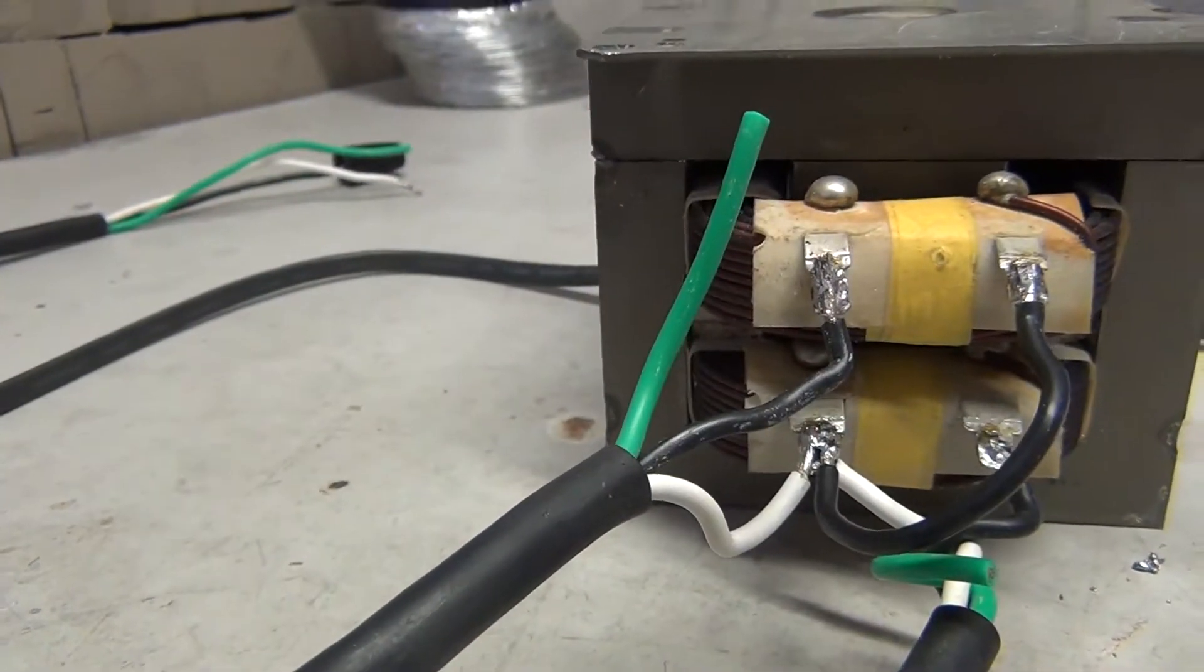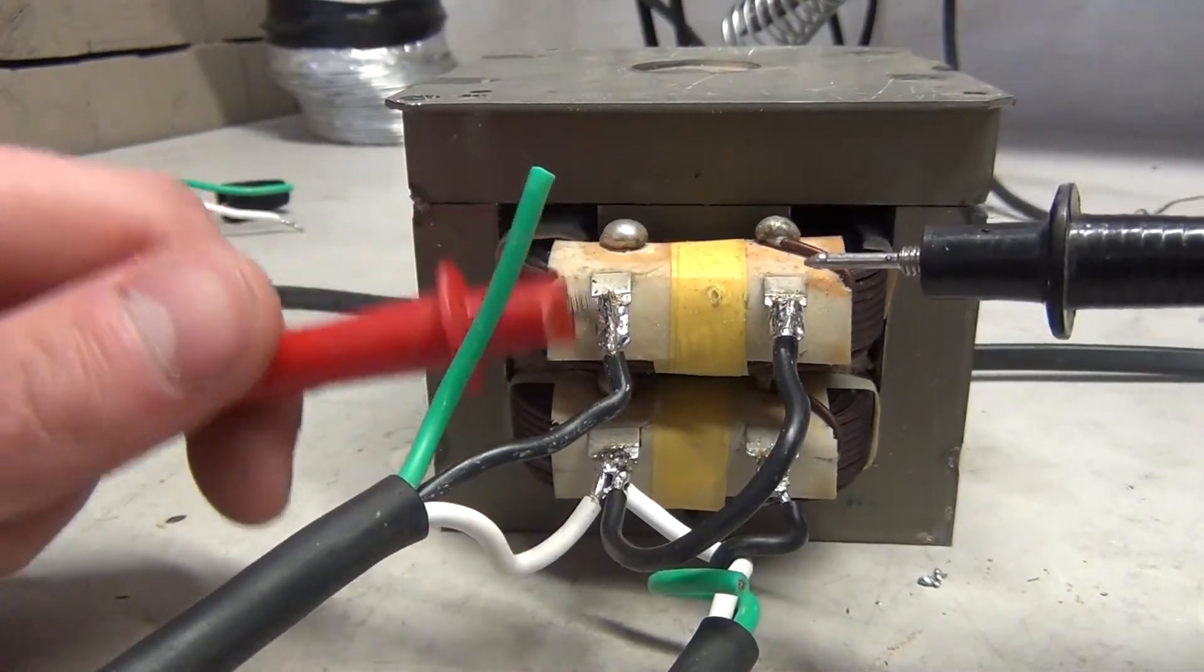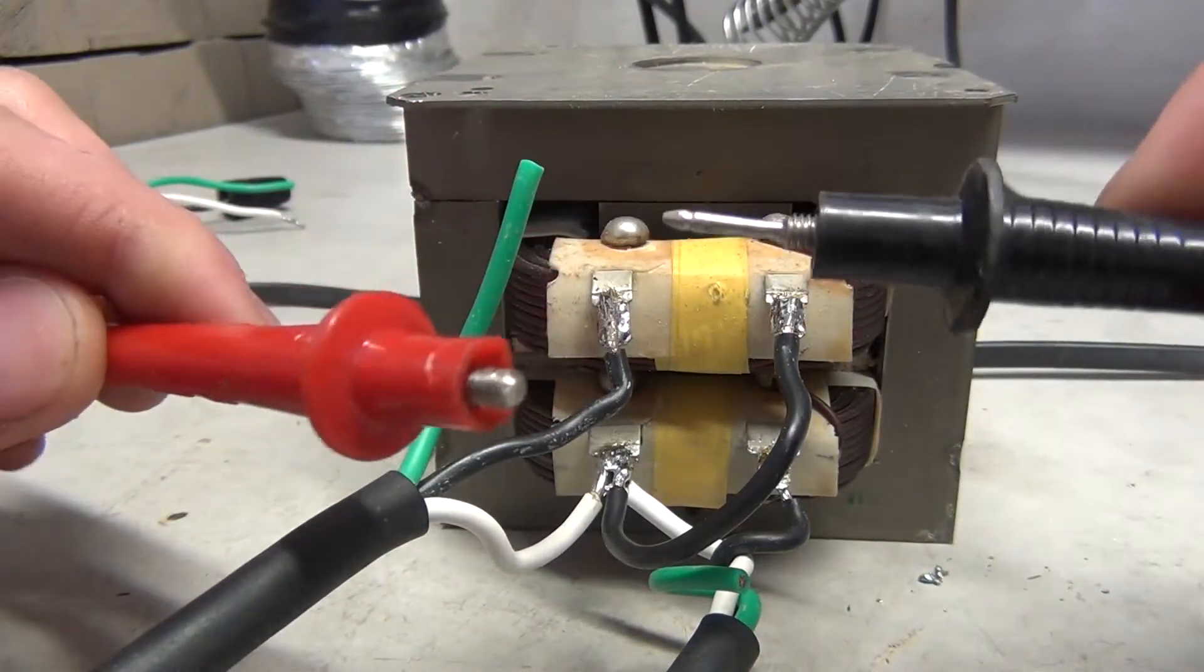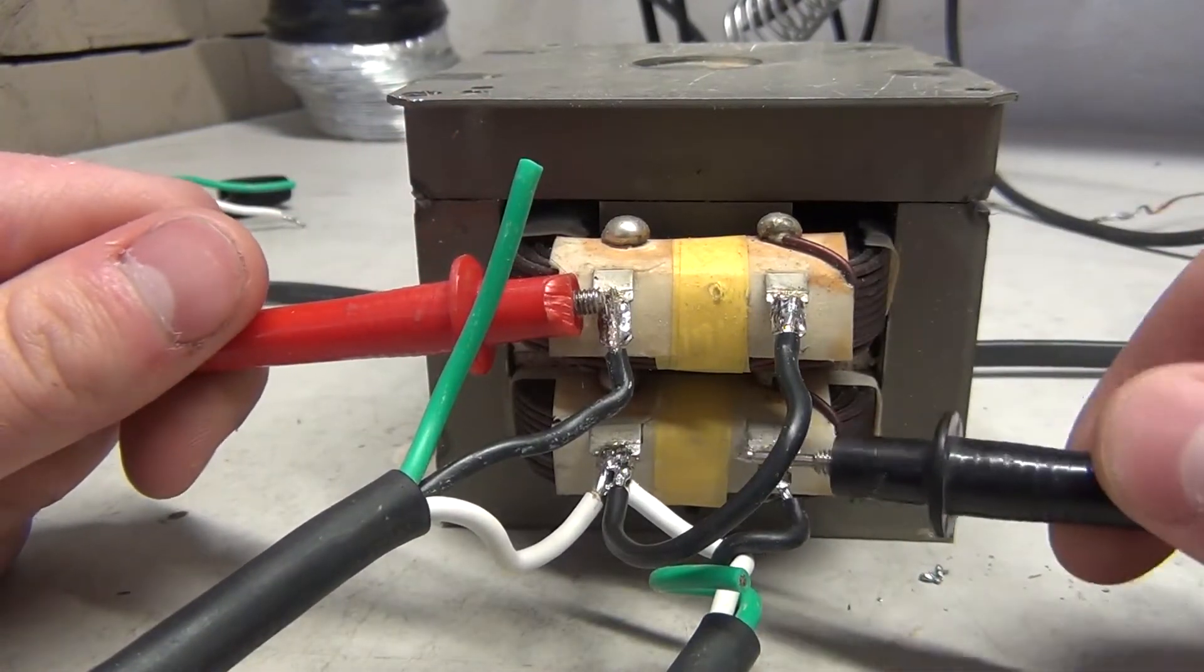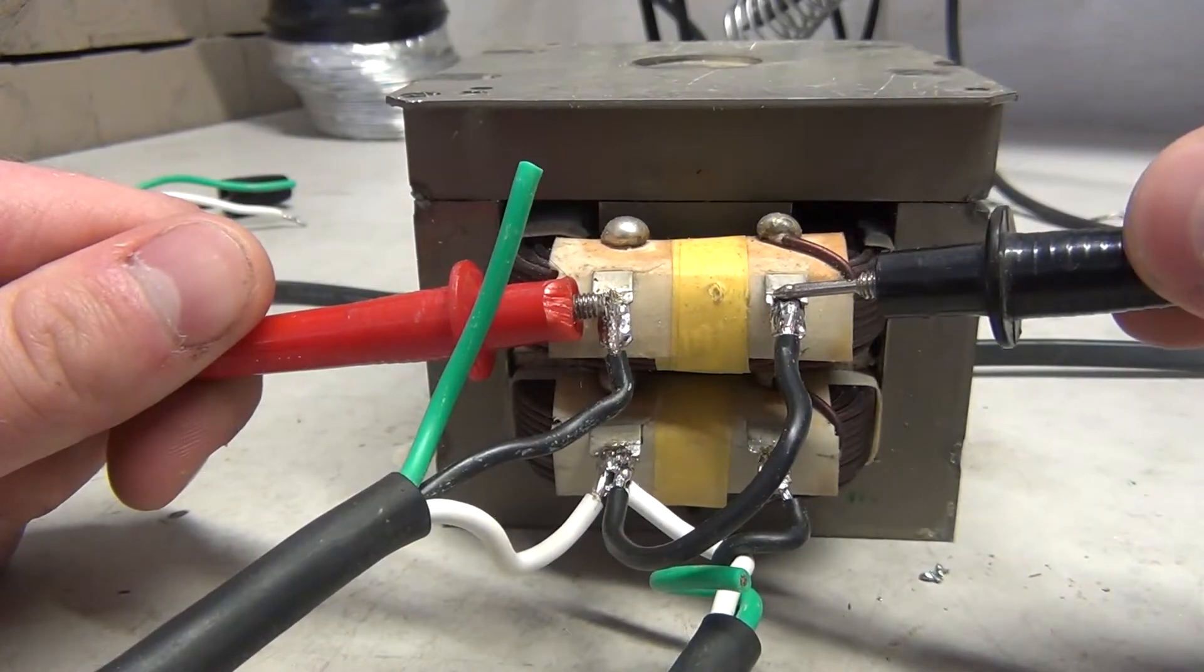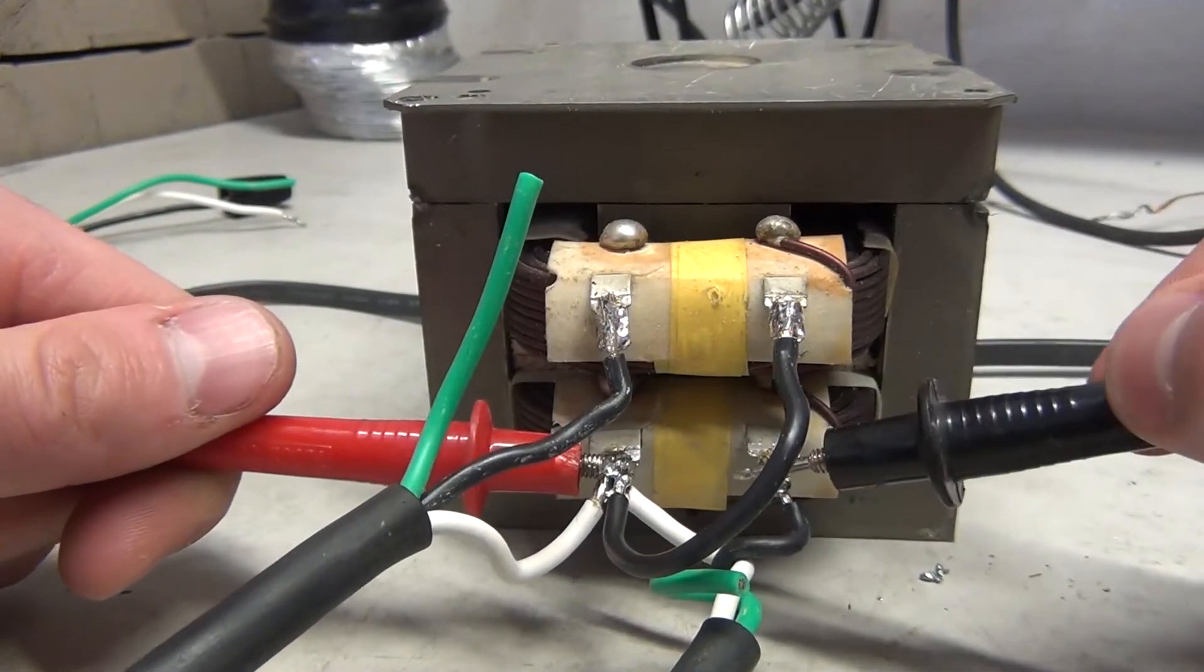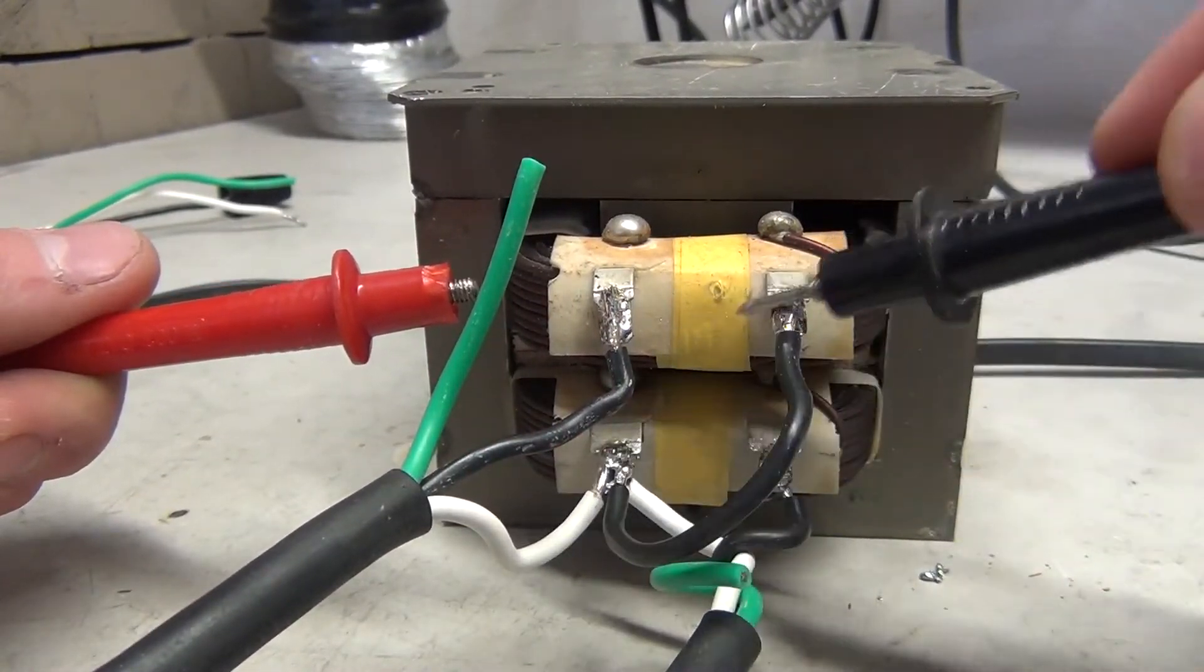So as I mentioned, here's the windings. You'd get your line to line from here to here. And then line 2 to neutral would be here to here. And then line 1 to neutral would be here to here. Or again, here to here. This is the same point, so it doesn't matter.